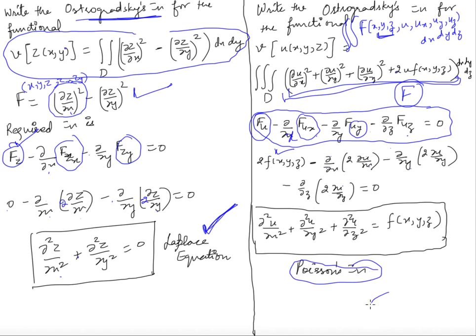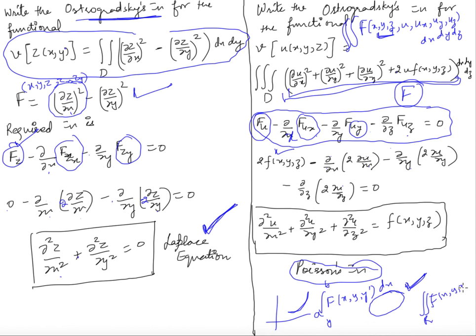Until now we have been dealing with fixed boundaries. In Euler's equation we found extreme values of functionals where y was specified at the endpoints. In Ostrogradsky's equation, z was specified on the boundary of R. In the coming videos we will handle the cases when we have free boundaries.